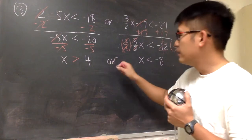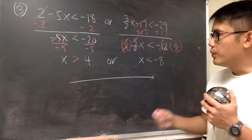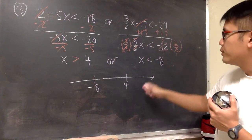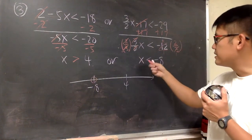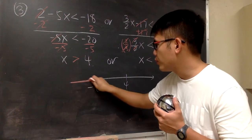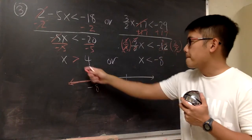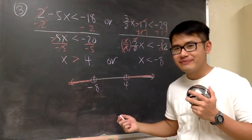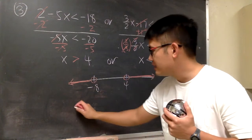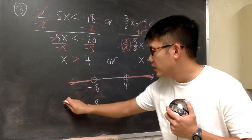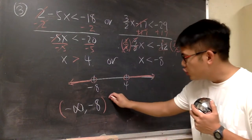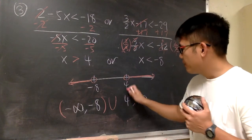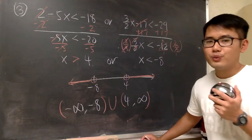We are done with the algebra: x is greater than 4 OR x is less than negative 8. For the graph, we mark negative 8 on the left and 4 on the right, both with open circles since we are not including them. We shade to the left of negative 8 and to the right of 4. For interval notation: negative infinity to negative 8 with parentheses, union with 4 to positive infinity with parentheses.